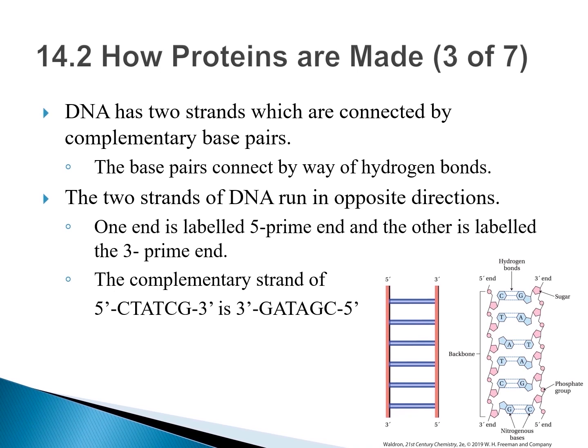A ladder analogy is a useful way to visualize a DNA double helix — a long chain consisting of two connected backbones resembling a ladder. The bases act as the rungs of the ladder, and the backbones act as the two vertical pieces. The two strands of the double helix each have different ends: one end is called the 5 prime end, the other the 3 prime end. The two strands run in opposite directions.